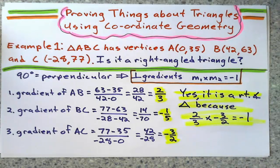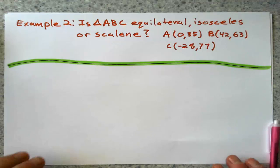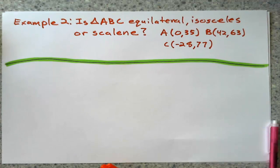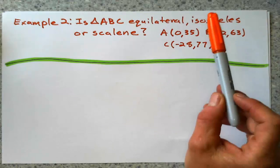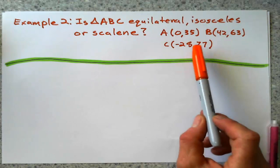We can do that, can't we? I think so. So example two is that same triangle. Is it equilateral, isosceles, or scalene given those three points?